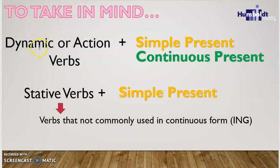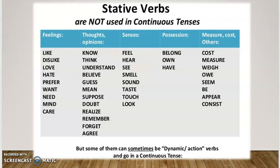Now let's consider a very important issue about verbs. We have dynamic or action verbs, and the other type is stative verbs. Dynamic or action verbs are the ones we can use in both simple tenses and continuous tenses. Stative verbs, however, are not commonly used in continuous forms with '-ing,' so we can only use them in simple tenses — in this case, the simple present.